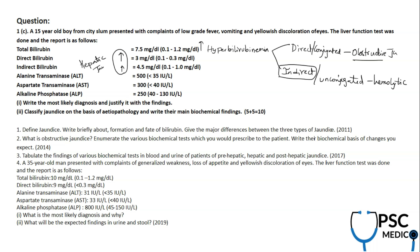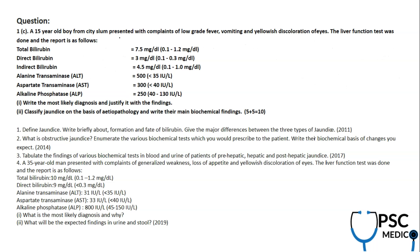In hepatic jaundice, you will also see elevation of the acute liver enzymes. So based on the laboratory reports, I would go with hepatic jaundice, but a good doctor always correlates lab findings with clinical findings.